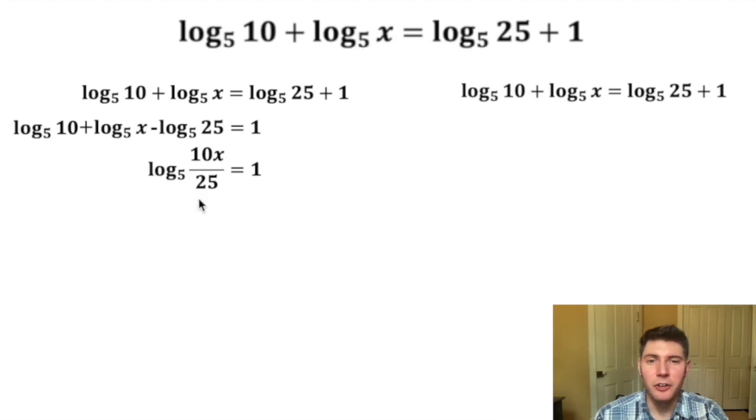By the definition of logarithms, we'll take the base of 5 to the power of 1 equals this 10x over 25. And then we can solve this by cross-multiplying.